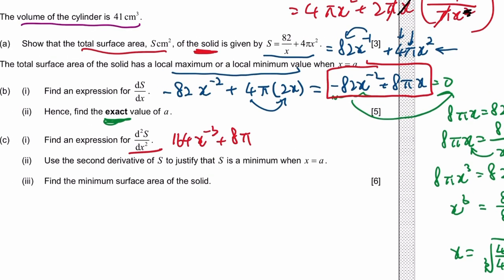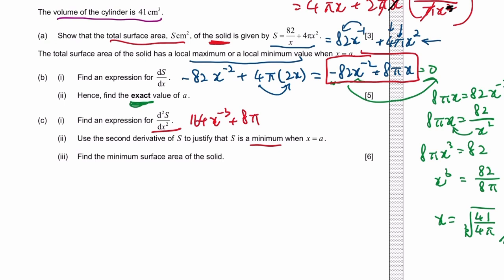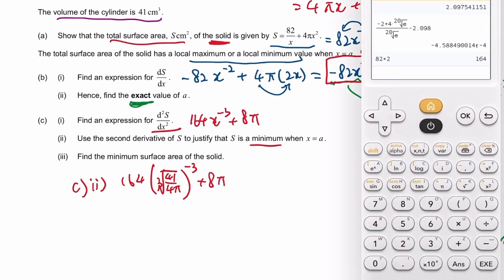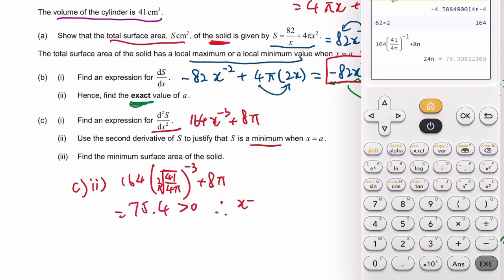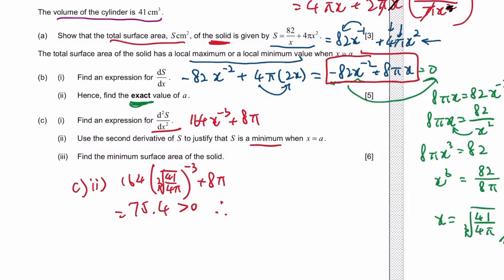Use the second derivative to justify it's a minimum. That means substituting the x value, cube root of 41 over 4 pi to the power of negative 3. You can type that into the calculator. Because the cube and cube root cancel out, x to the power of negative 3 plus 8 pi. It's positive, therefore it's a minimum.